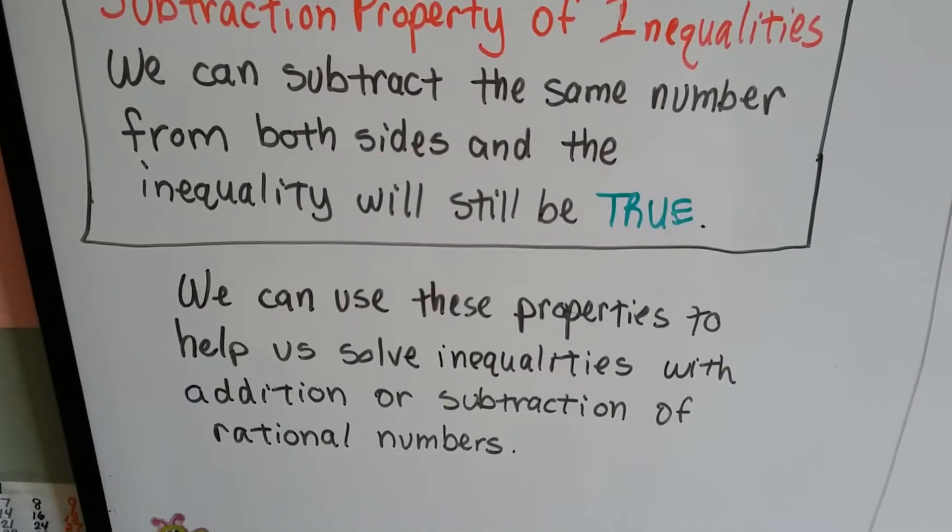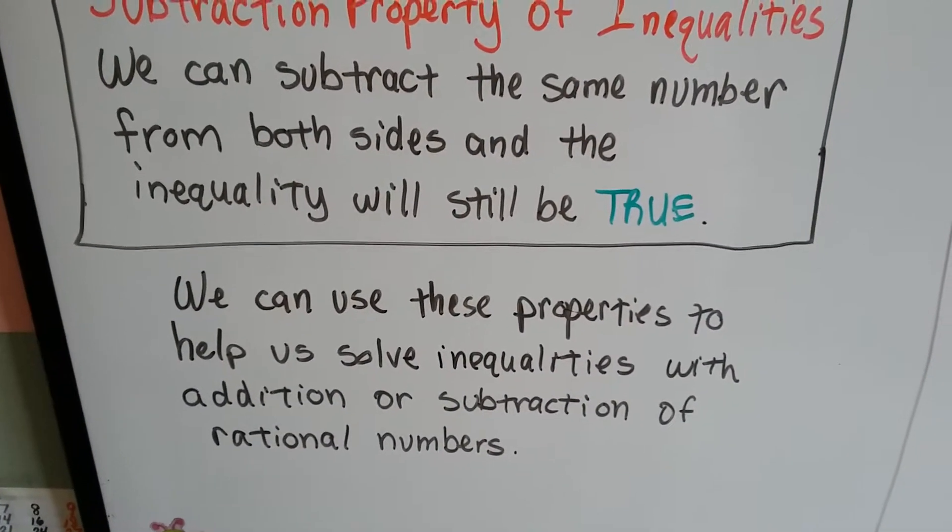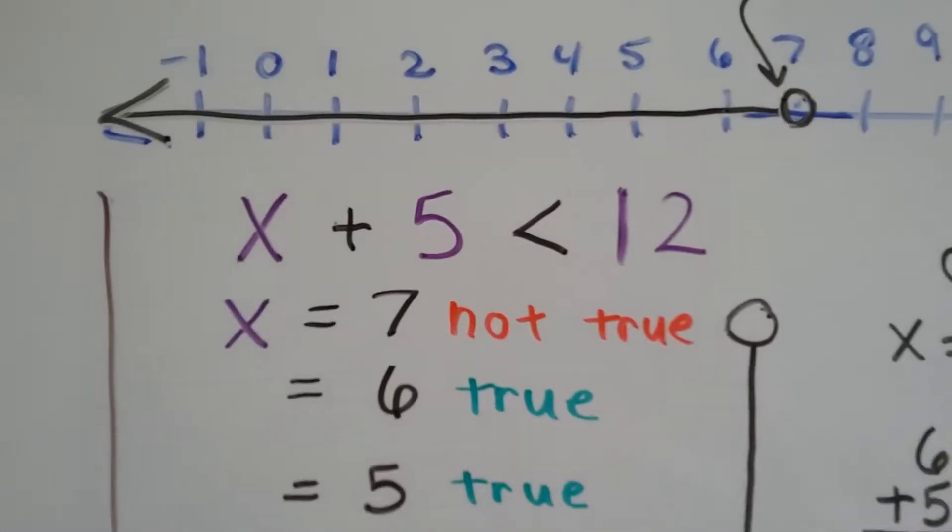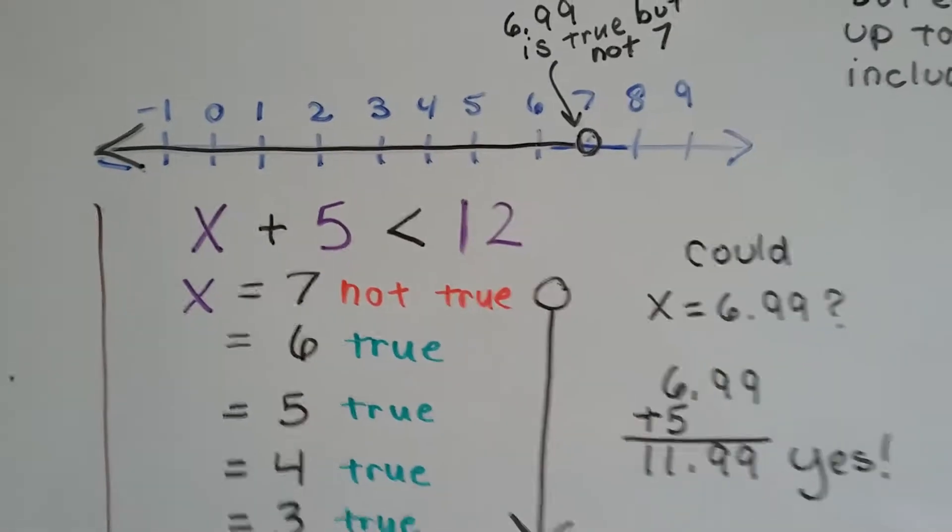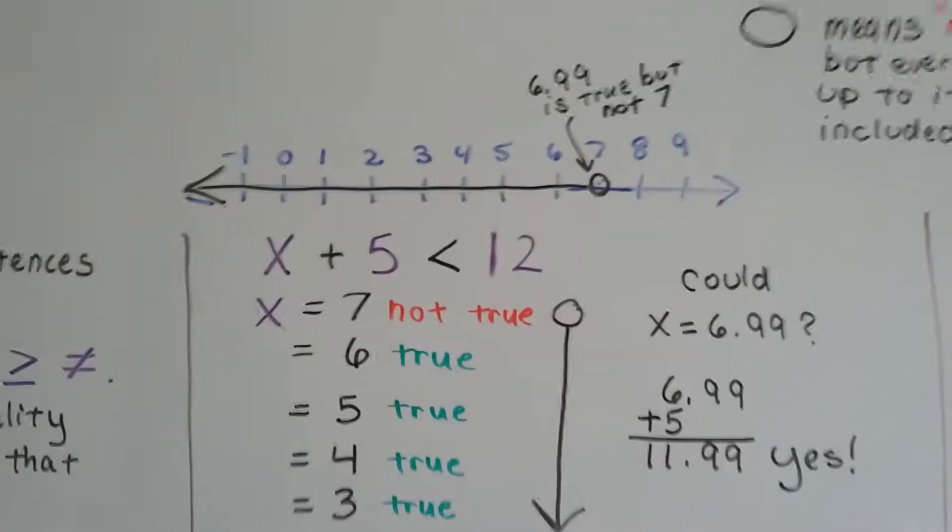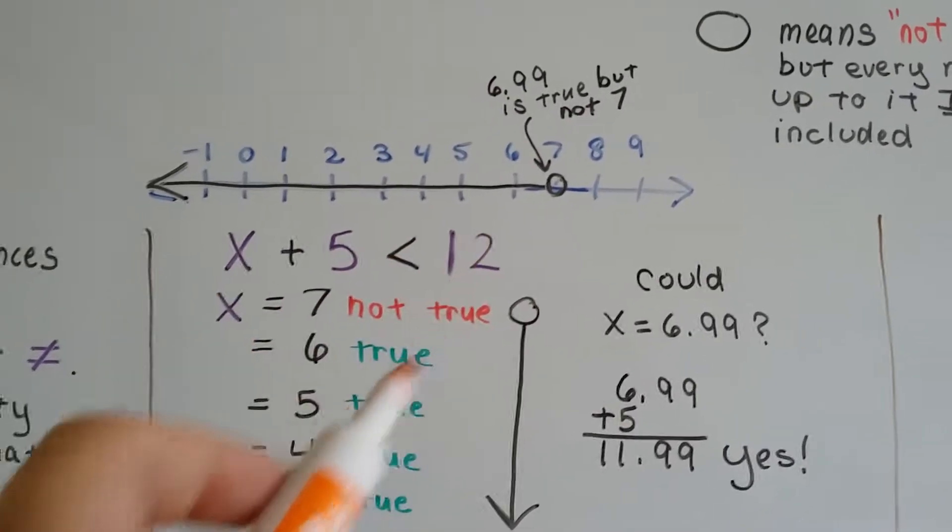We can use these properties to help us solve inequalities with addition or subtraction of rational numbers. So let's take a look at this one. We've got x plus 5 is less than 12. Got our number line up here. So some number plus 5 is less than 12.